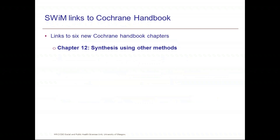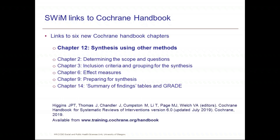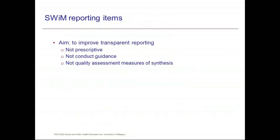The SWIM reporting items link to several of the new Cochrane Handbook chapters. In particular, the SWIM reporting items align with Chapter 12, Synthesis Using Other Methods — that is, methods other than meta-analysis. The SWIM reporting items also reflect content in five other chapters of the new Cochrane Handbook. The aim is to improve transparent reporting, and it's important to note they are not prescriptive — they're guidance to prompt review authors to consider what is important to report for their synthesis. They are reporting guidance, not conduct guidance; for conduct guidance, authors should look to Chapter 12 of the Cochrane Handbook.